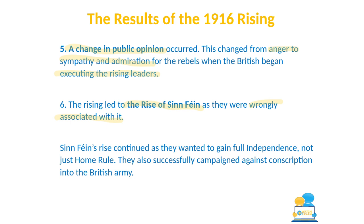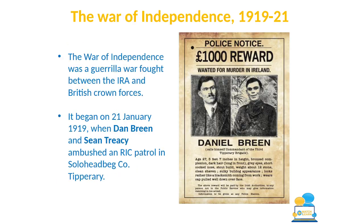Sinn Féin's rise continued because they wanted full independence, not just Home Rule. They also successfully campaigned against British conscription of Irish men into the British Army during World War One, further boosting their popularity. While the 1916 Rising had not directly achieved its immediate goal of removing the British from Ireland, it set in motion a chain of events that would lead to Ireland eventually gaining some form of independence.